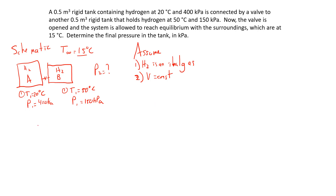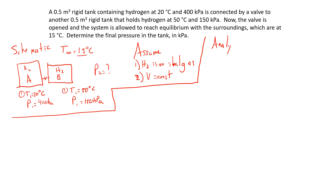Now we have our assumptions and schematic drawn. Starting with our analysis: the total volume will be the volume of tank A plus the volume of tank B. Both tanks have a volume of 0.5 meter cubed, so the total volume is going to be one cubic meter.